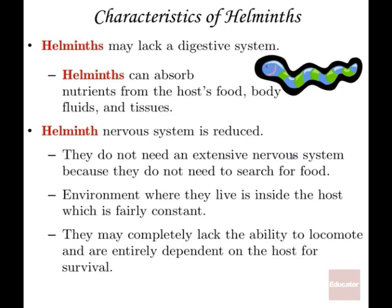What are some of the characteristics of helminths? First of all, a large number of them don't have a digestive system. If the worm is living out in the earth on its own, they probably have a digestive tract. But these obligate parasites often don't have a digestive tract — and quite frankly, they don't need one. Because they're living in wonderfully nutritious places like the bloodstream, lymphatics, or intestines, they can just absorb the nutrients from the human host. If they're right there in the small intestine, they get pre-digested protein, carbohydrates, and lipids.